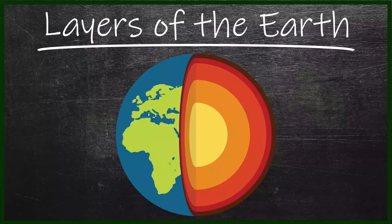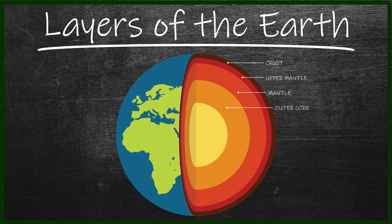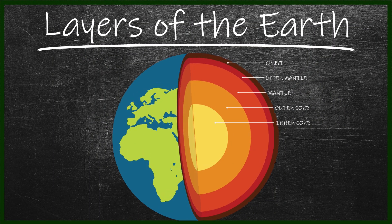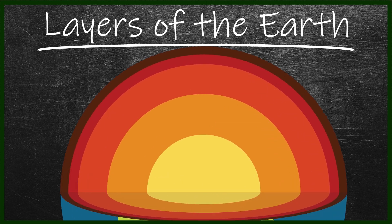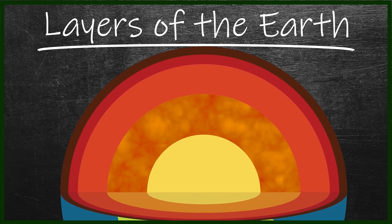Earth's magnetic field is also generated by the movement of charges. The Earth consists of four layers: crust, mantle, outer core, and inner core. The outer core consists of molten metal that's constantly moving and churning.